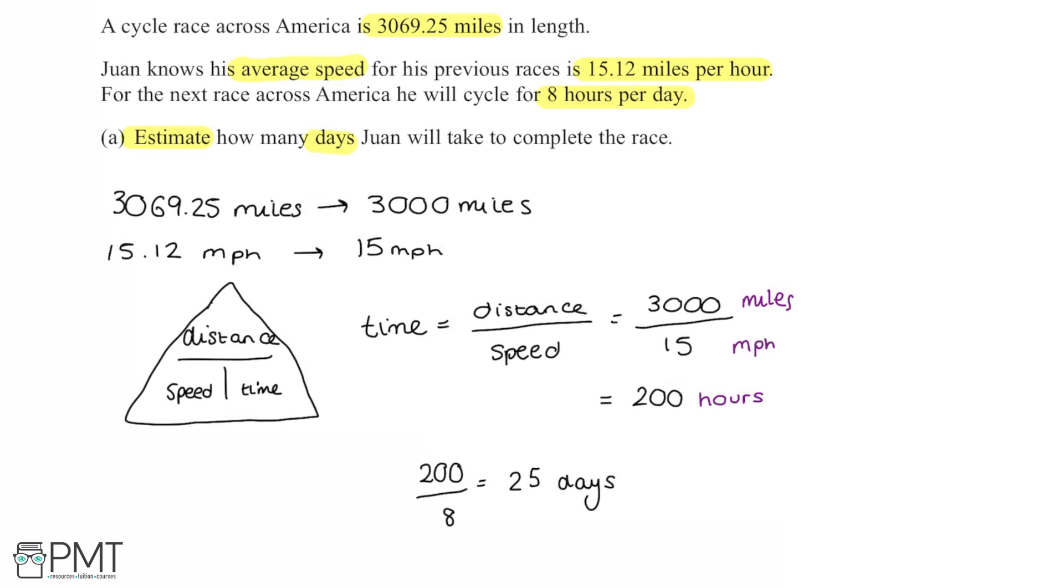The marks are distributed firstly for doing the time calculation, so the 3000 divided by 15 or some similar values, some kind of distance over speed. The second mark is for dividing this by 8 to work out how many days it should take if we're doing 8 hours of cycling a day. The final mark is for the correct final answer, which could be a range of different things depending on which input values you've used.